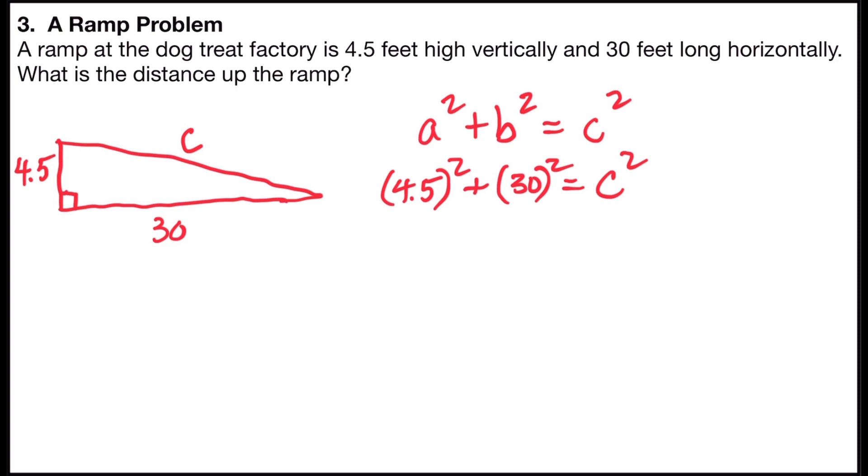4.5 times 4.5 is 20.25, and 30 times 30 is 900, and that will be equal to C squared. I can add the two numbers together and get 920.25, and that will also be equal to C squared.